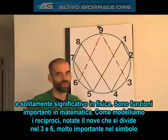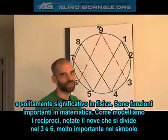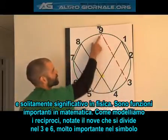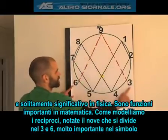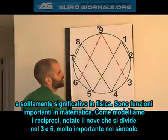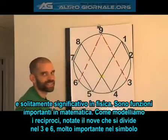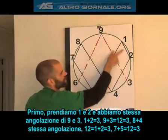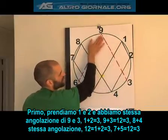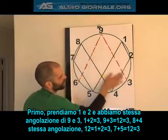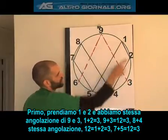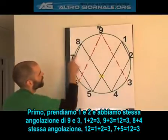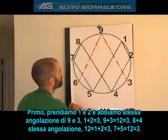So how do we model reciprocals here? First of all, notice my 9 here is splitting into 3 and 6 — highly significant to this symbol. If I take my 1 to my 2, notice it's at the angle of the 9 to the 3. 1 plus 2 is 3. And 9 plus 3 is also 3, by the way.